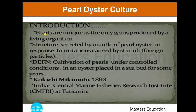Introduction to pearl culture. Pearl is unique as the only gem produced from a living organism. The pearl is a structure secreted by the mantle of the pearl oyster. The organism which secretes or produces a pearl is called a pearl oyster, and it produces the pearl in response to an irritation or in response to some foreign stimuli.